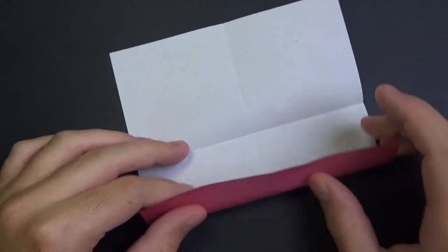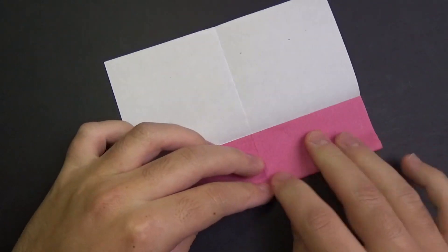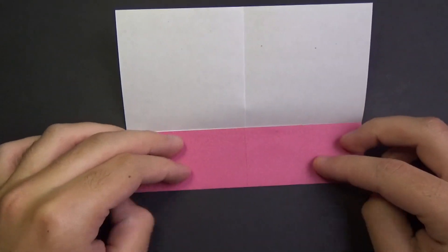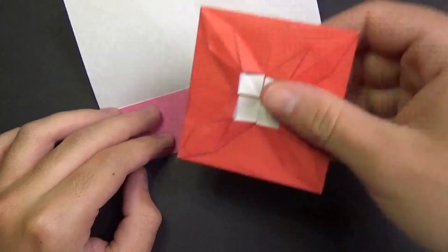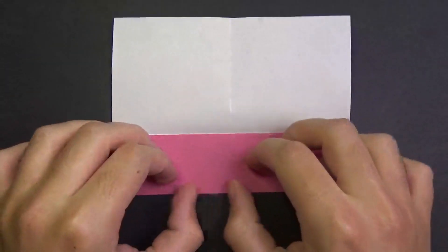And unfold, and fold the two sides to the crease. And believe it or not, this model is actually a lot easier than it looks. To me.